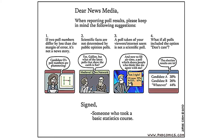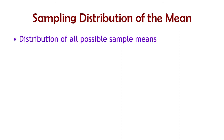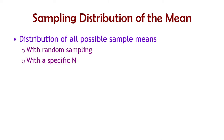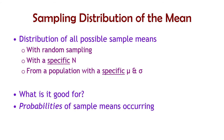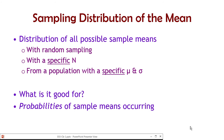On with sampling distributions and confidence intervals — we're getting into the confidence interval realm here. The sampling distribution of the mean is the distribution of all possible sample means, taken with random sampling and a specific sample size, from a population with a known mean and known population standard deviation. We calculate the mean of each of these samples. This distribution is good for finding probabilities of particular sample means or means within particular ranges occurring.